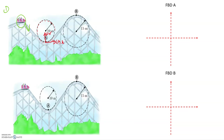How many forces are acting on the cart at point A? There's obviously going to be a weight force — gravity is pulling the cart downwards. Then we need to figure out what other forces are present. The cart is in contact with the track, so the track is going to be pushing up on the cart. That upward force is the normal force. So we have two forces acting at point A.